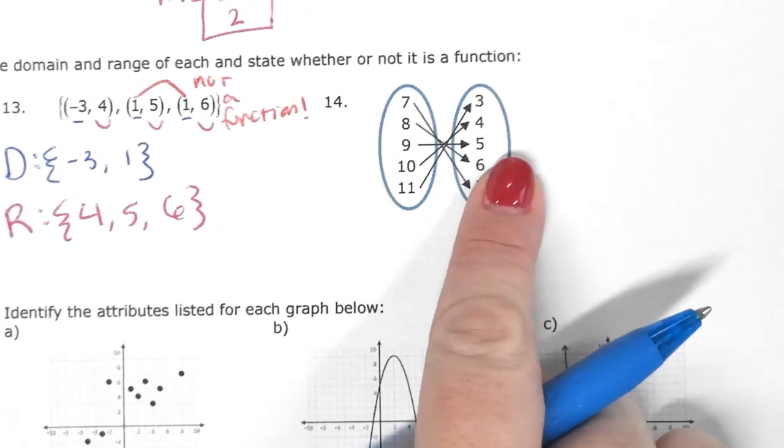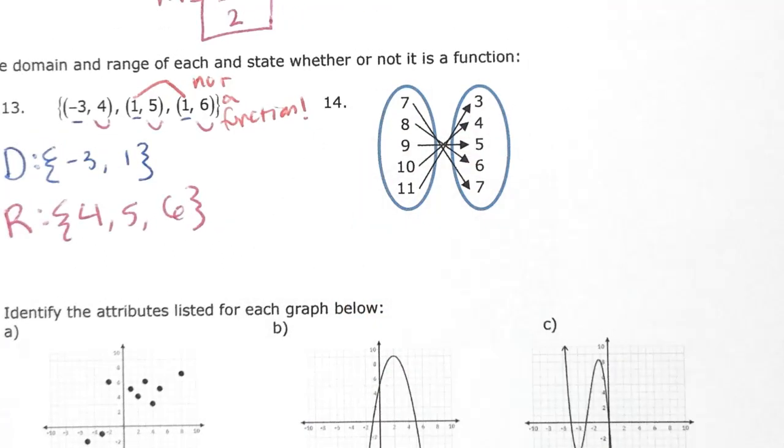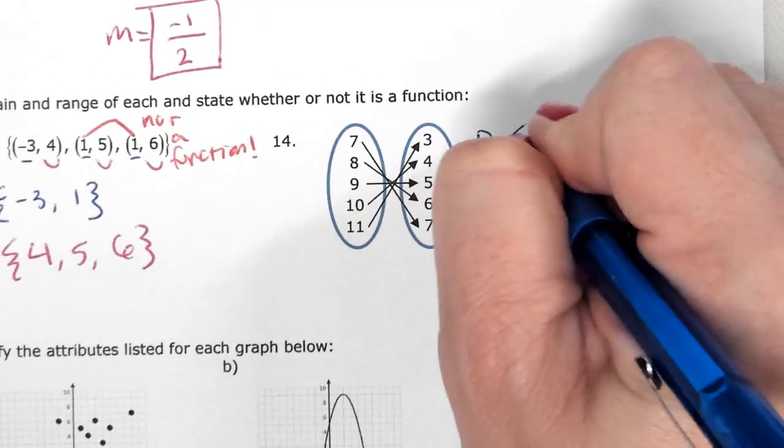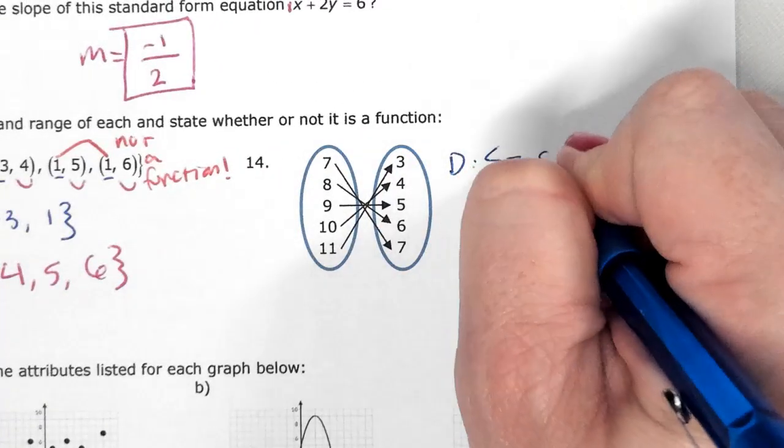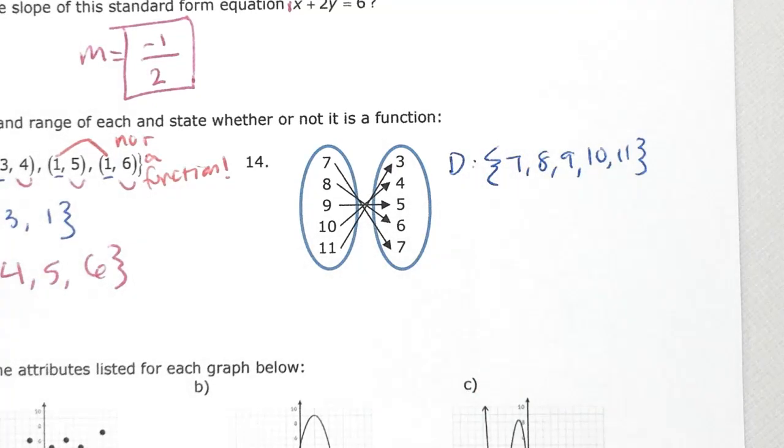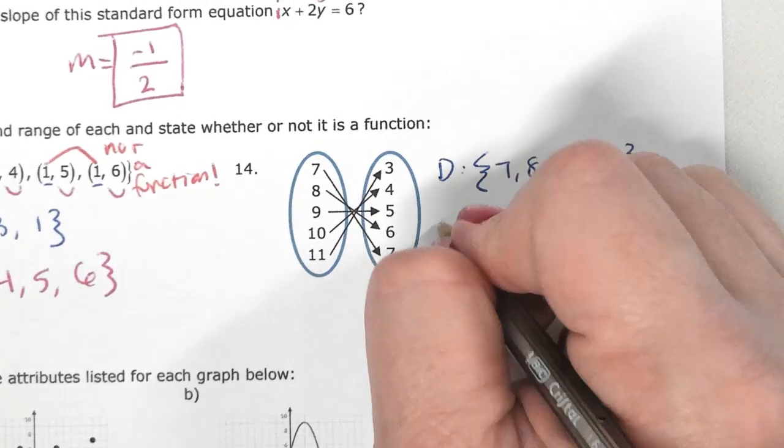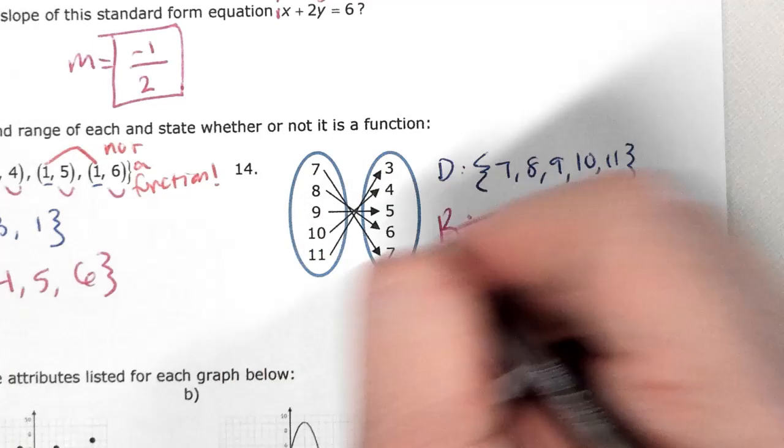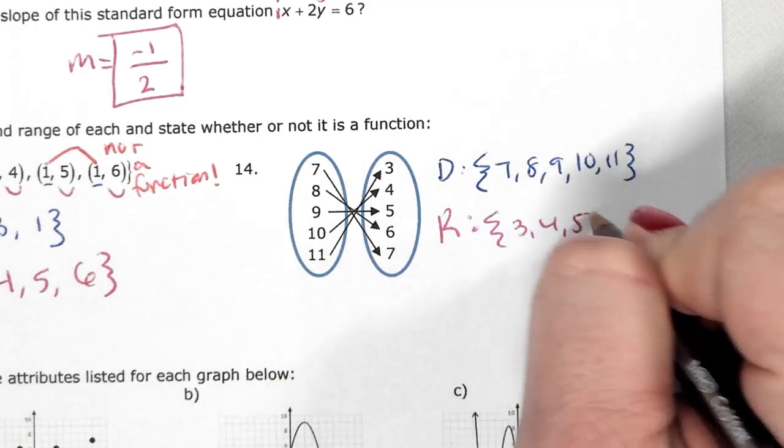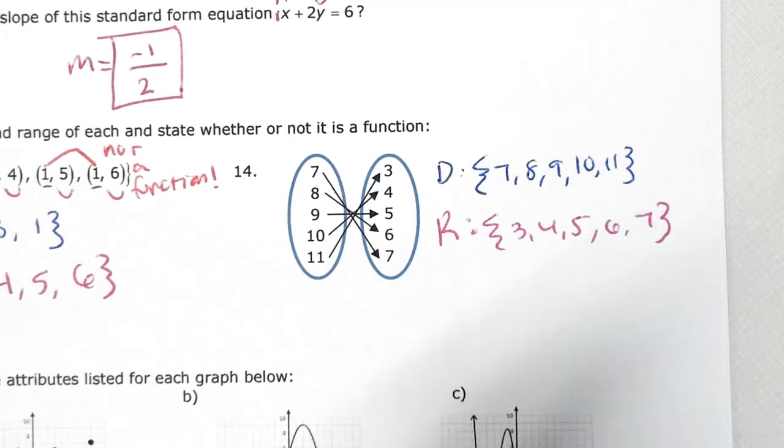So the thing we like about this form is that domain and range are usually already in order. So my domain is 7, 8, 9, 10, 11. Make sure they all have an arrow, because if they're not used it's not part of your domain. All numbers have an arrow, so it's good.